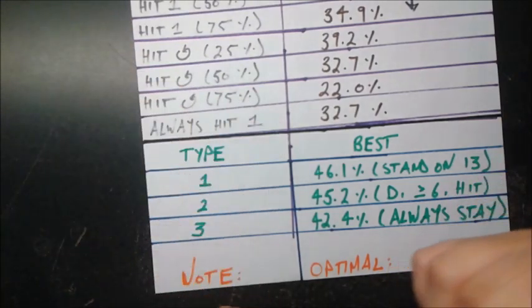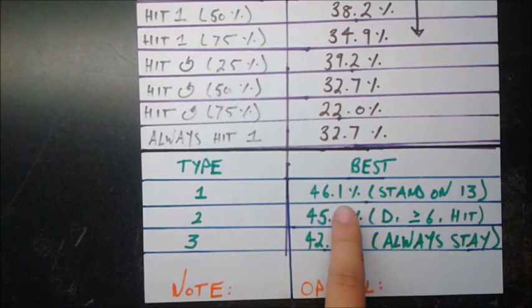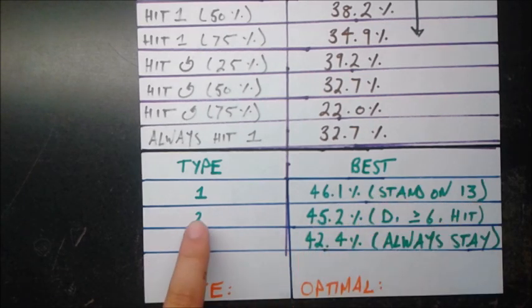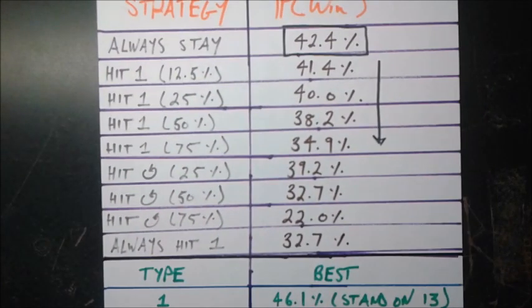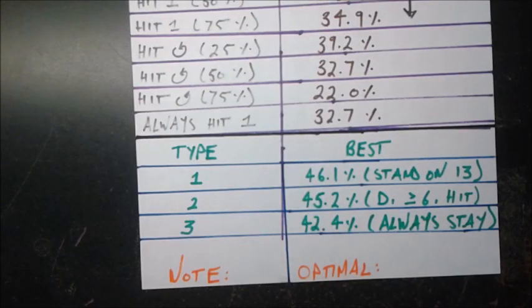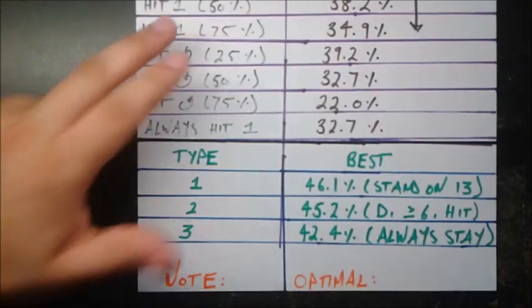So now let's compare the three umbrella strategies. We see that the type one best one was 46.1%, stand on 13s, stand or stay. So type two was 45.2%. That's when you have the dealer's card is greater than or equal to six and of course, yours is less than 17. You're going to hit. And the one we just looked at, the crude one, which is 42.4%, is always staying. So we do see evidence that we can do better than always staying. We can do better than the crude regimes we have here.